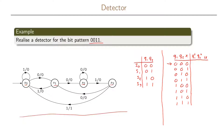Starting with the first row in our truth table, when we are in state 00 — which is state S0 — and we receive a zero at the input, we will go to state S1, which we have called 01, and we will output zero. For the next row, we are still in state S0 and we get a one as input, so we stay in state S0 and output zero.